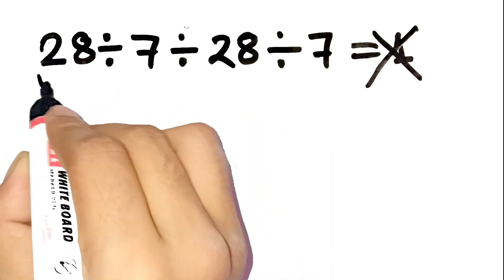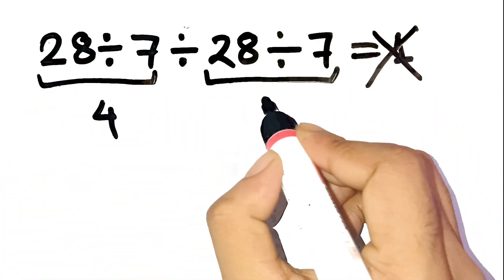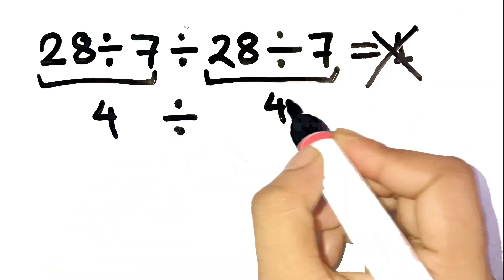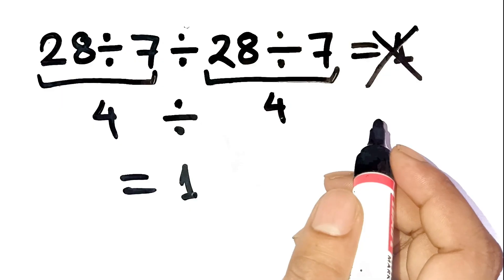I know what you're thinking. 28 divided by 7 is 4, right? And again, 28 divided by 7 is 4. So 4 divided by 4 is 1. Yep, that seems super reasonable. Totally makes sense.